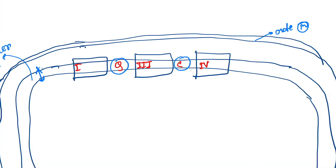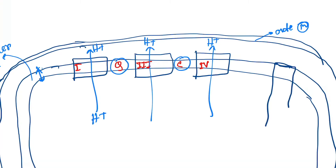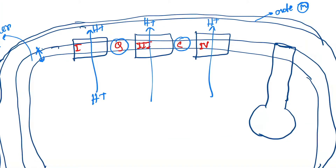Now you have read that energy is getting released through the transport chain. As a result of this release of energy, hydrogen present in the matrix will be released to the inter membrane space — so hydrogen will be present here. Through the reaction this will happen. Now here another complex is present, called complex five or the ATP synthase complex.